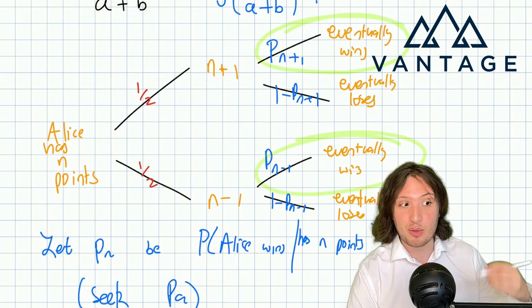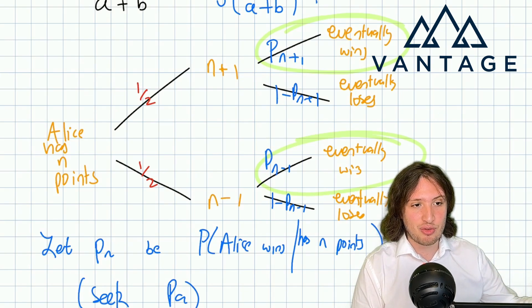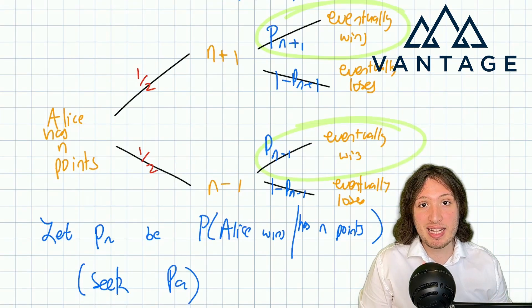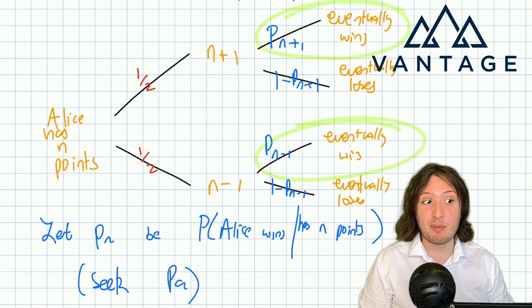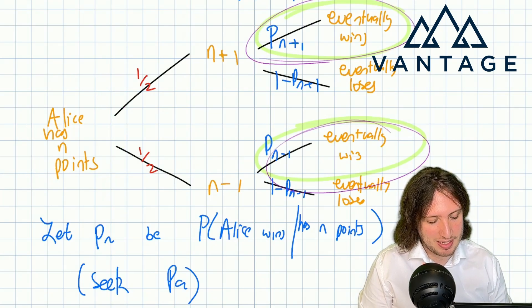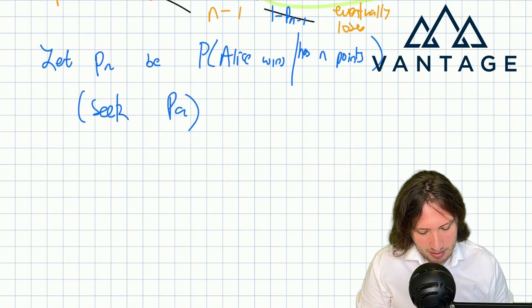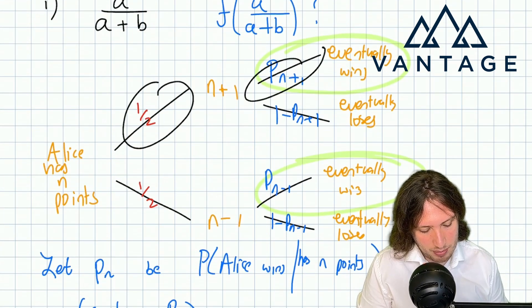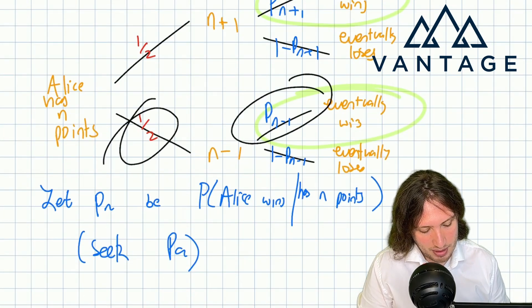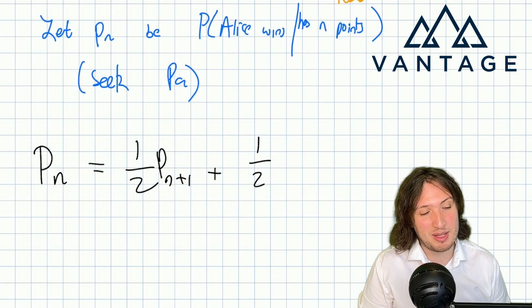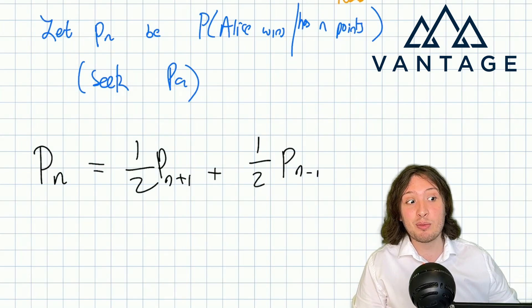Now we started our tree from a situation where Alice had n points, so by definition if I add up all the winning outcomes in this tree, that's going to give me the probability P_n. Right, because we've taken a probability tree starting from when she had n points. All the winning outcomes, their probabilities adding up, gives me the probability that she has won from a situation with n points. So that means that P_n has got to be equal to (1/2)P_{n+1} + (1/2)P_{n-1}. This is brilliant news. This is a recursion. Now we can relate P at one value to P at other values. Hopefully this will lead us where we need to be.